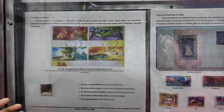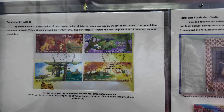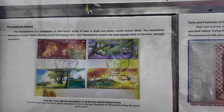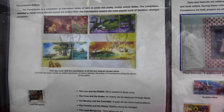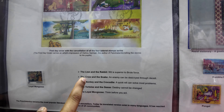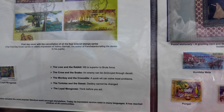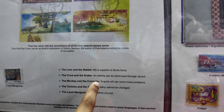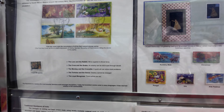In India, these Panchatantra stories were told to children by their grandparents. There are five stories: the Lion and the Rabbit, the Crow and the Snake, the Monkey and the Crocodile, the Tortoise and the Geese, and the Loyal Mongoose.